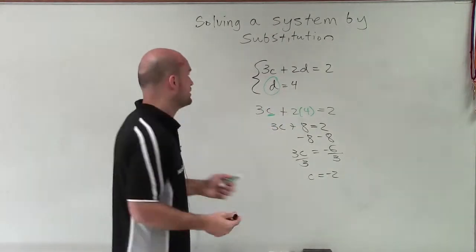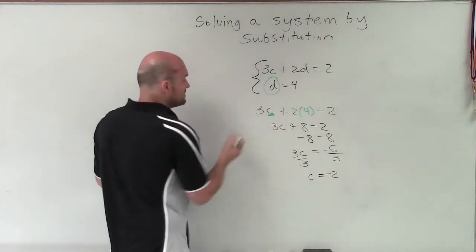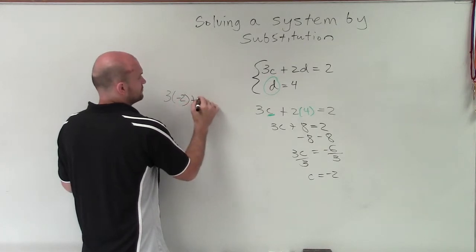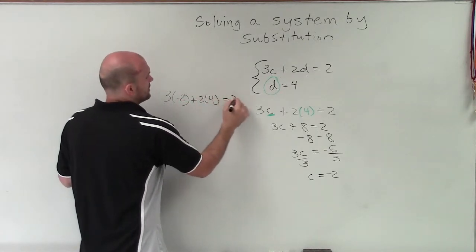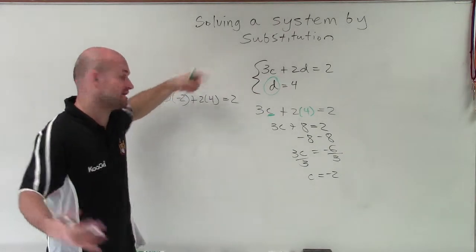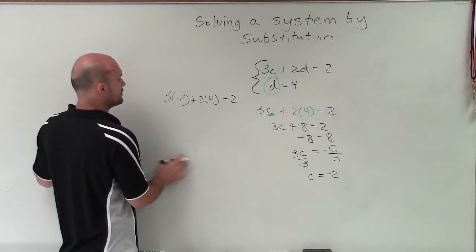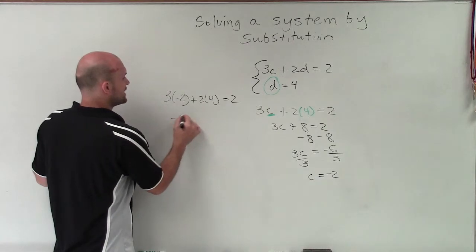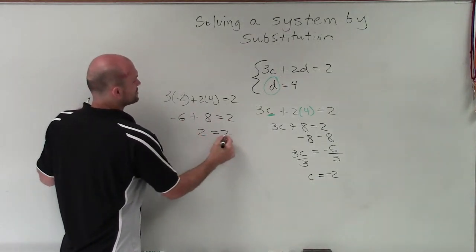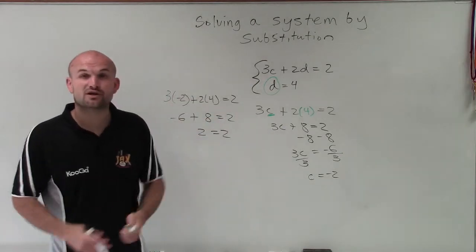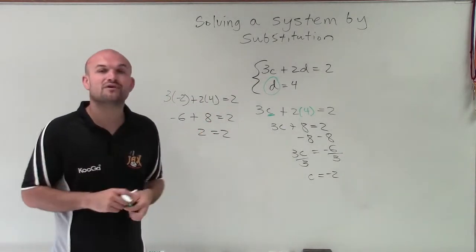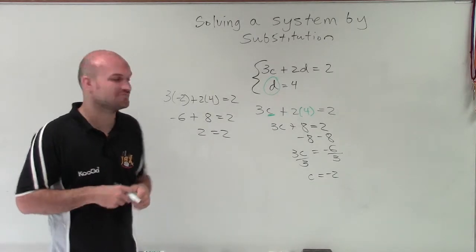We can always check our equation to make sure it's true by plugging back in our values for c and d. If both of our variables make this equation true, we know it's the solution. So 3 times negative 2 is negative 6 plus 8 equals 2. That of course equals 2, so we know it makes our equation true. It's obviously true for the second equation. So that's how you solve by using substitution. Thanks.